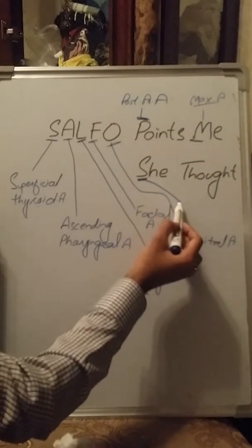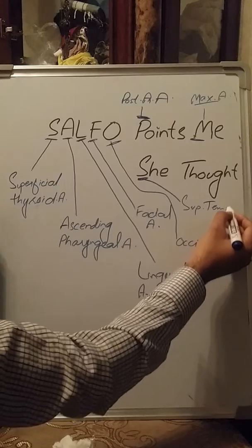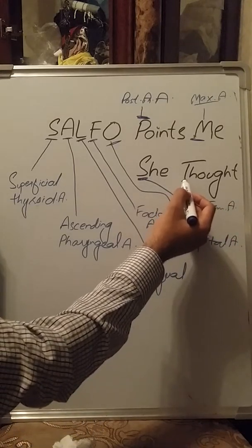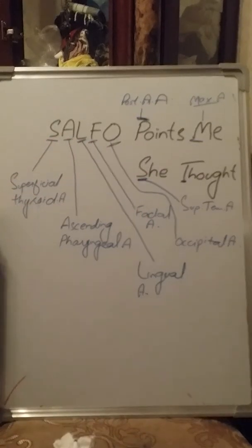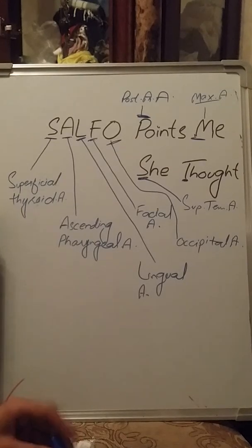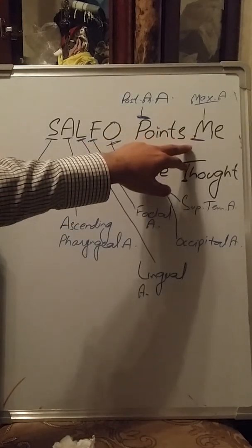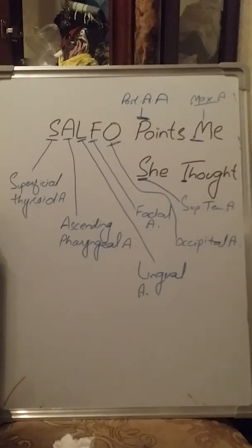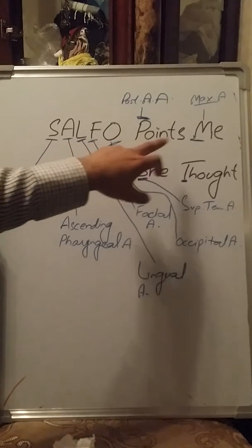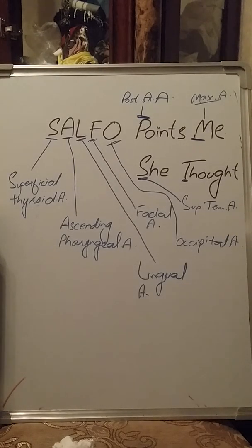S stands for Superficial Temporal Artery, and T stands for Transverse Facial Artery — though we have not discussed that branch in this lecture, it is not essential to memorize. The two key terminal branches to remember are the Maxillary Artery and the Superficial Temporal Artery. So the mnemonic 'SALFO POINTS ME SHE THOUGHT' covers all branches of the external carotid artery. Thank you for watching.